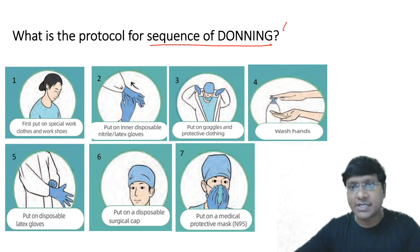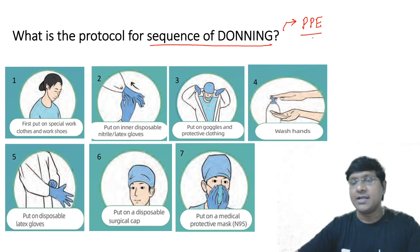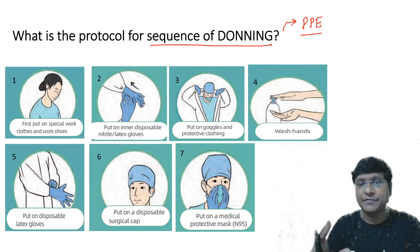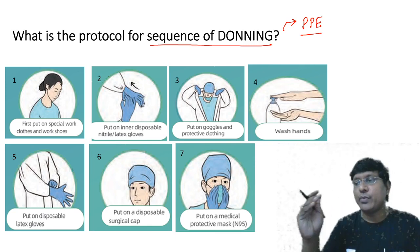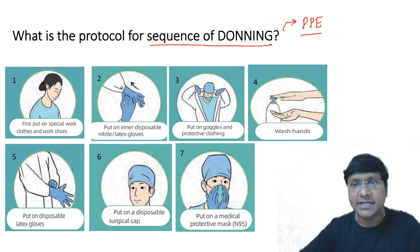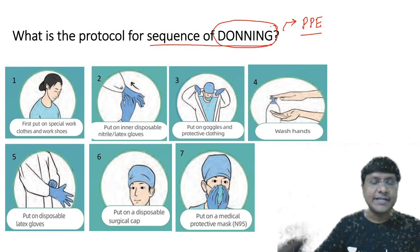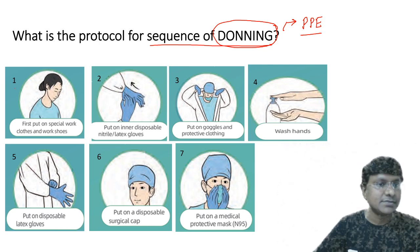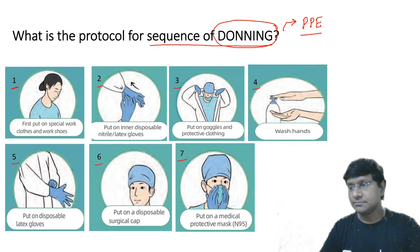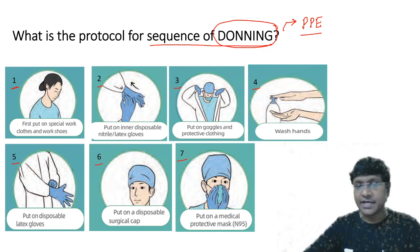Nowadays you see doctors on social media wearing personal protective equipment. Once PPE is given to you, there is a specific sequence to wear it — this is called donning. I have given numbers one through seven randomly. Can anyone arrange them in sequence? This can be asked as a sequence-based question in exams.